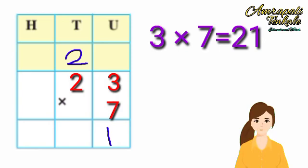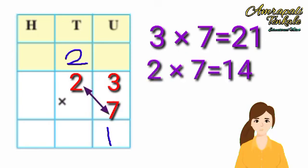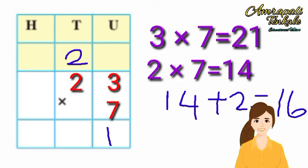Now 7 twos are 14. And together with the carried over 2, we get 16 tens. 16 tens means 1 hundred and 6 tens. So the product is 161.